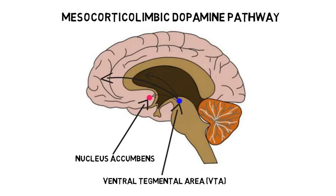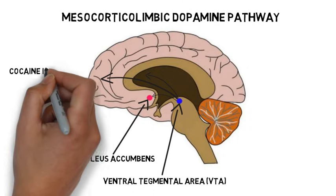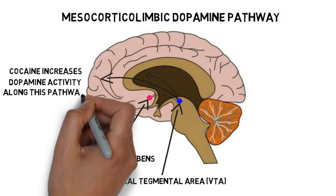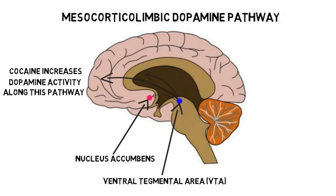These areas include a region called the nucleus accumbens, which is considered important to addiction and is activated whenever we do something rewarding. Thus, when someone uses cocaine, dopamine activity along the mesocorticolimbic pathway is increased, causing dopamine levels to rise in regions like the nucleus accumbens and frontal cortex.